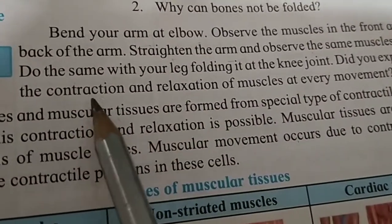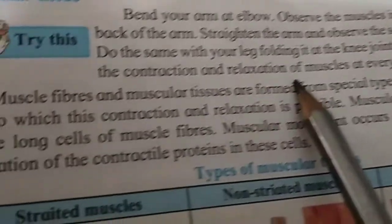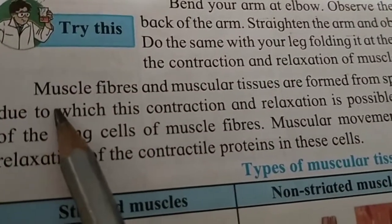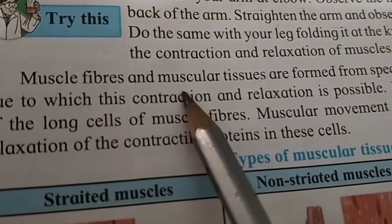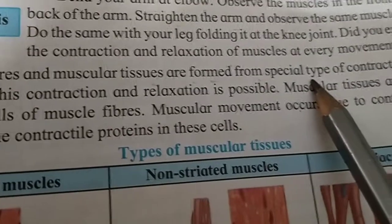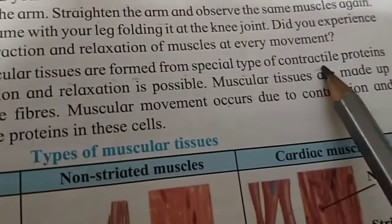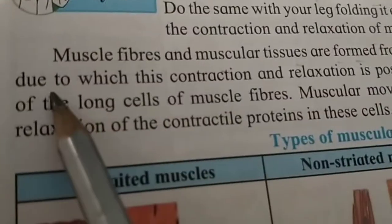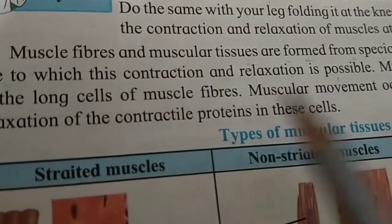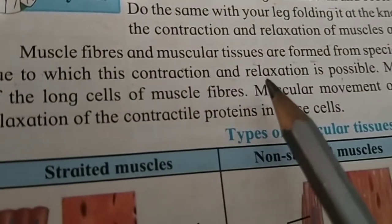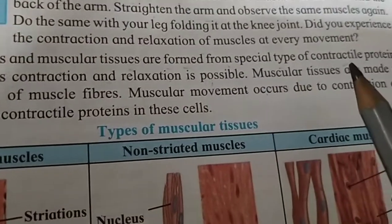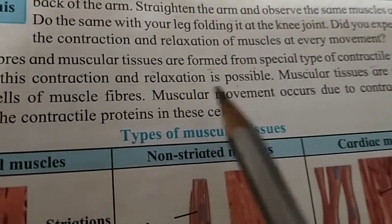We are talking about how our muscles contract and relax when we perform any movement. The muscle fibers and muscular tissues are formed from a special type of contractile protein, due to which contraction and relaxation is possible.